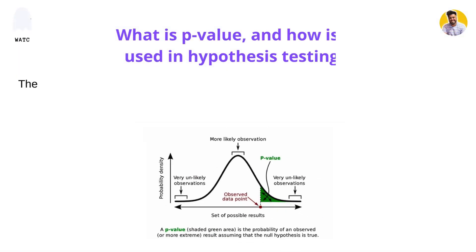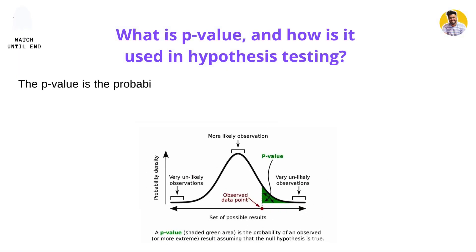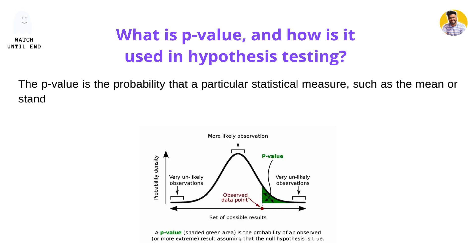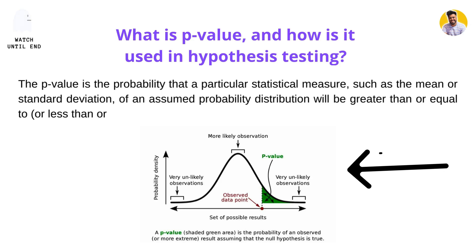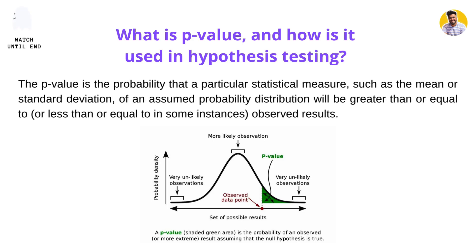Our first interview question is: what is p-value and how is it used in hypothesis testing? The p-value is the probability of a statistical measure — such as a mean, standard deviation, or any probability distribution — that would be greater than or equal to the observed results. If my p-value is 0.05 and my observed data point falls within that p-value range, then it is acceptable, otherwise it would be rejected.